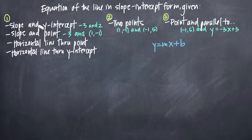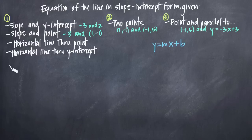For example, if you're given the slope and the y-intercept — where the slope is negative 3 and the y-intercept is 2 — you'll plug negative 3 in for m, the slope, and 2 in for b, the y-intercept, and you'll get y equals negative 3x plus 2. That's the equation of the line in slope-intercept form.